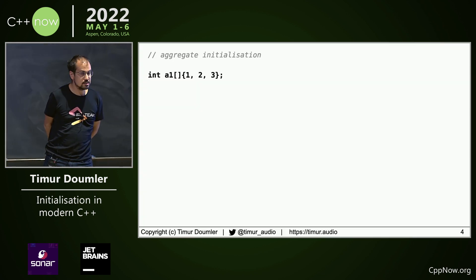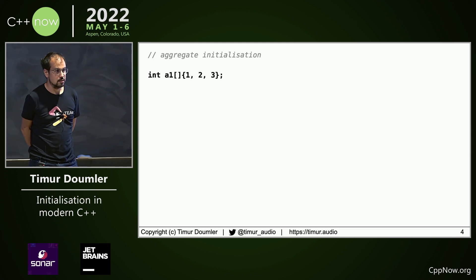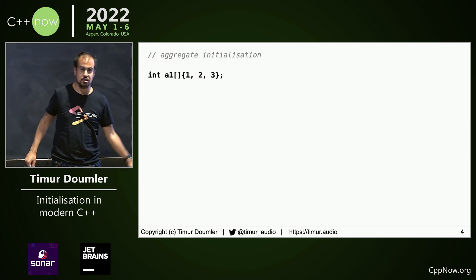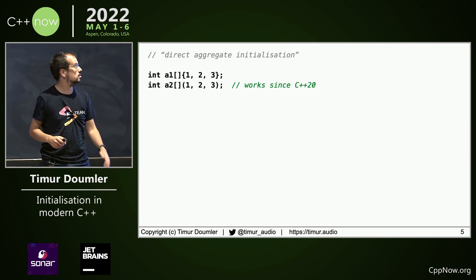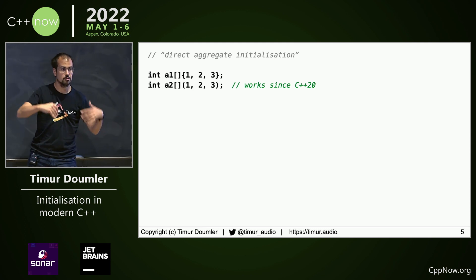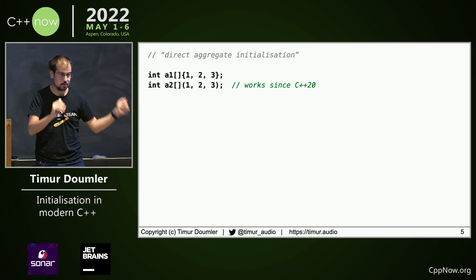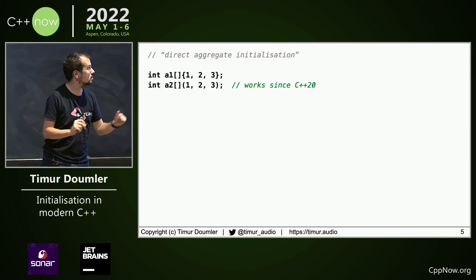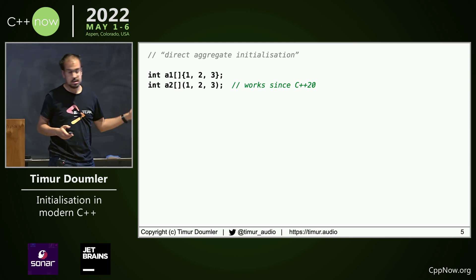What that means is: now if you have an aggregate, for example an array, you can not only initialize it with braces but you can also initialize it with parens, like a constructor call syntax. That's what we call direct initialization. That works now since C++20.